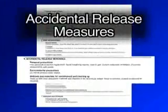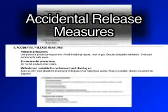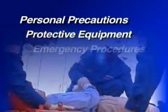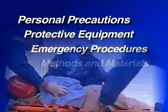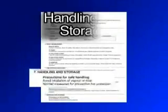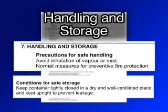Section 6: Accidental Release Measures. Lists steps to take in the event of a spill or other type of accidental release. States personal precautions, protective equipment and emergency procedures, and methods and materials for containment and cleaning up.